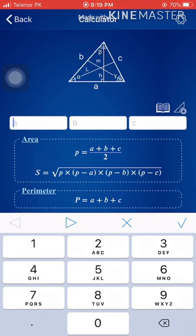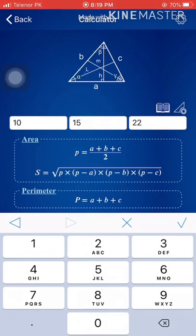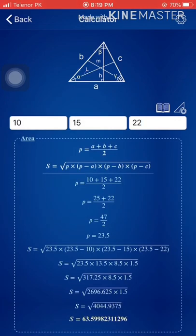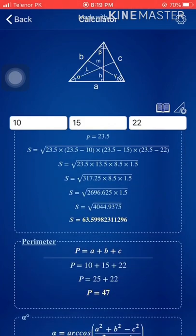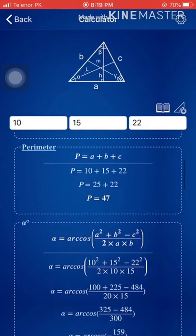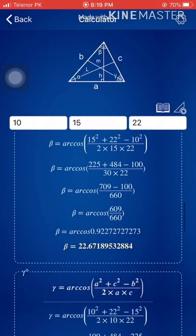This is going to calculate the area using Heron's formula. Let's say the sides are 10 units, 15 units, and 22 units — I'll tap update. The area is 60 square units, the perimeter is 47 units, and the angles alpha, beta, and gamma have also been calculated. Amazing!